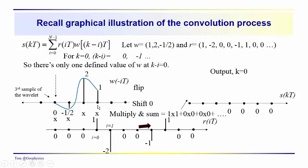So the zeroth value of the wavelet is one, the minus one value of the wavelet is zero, minus two is zero, and so on. For k equal to zero, i equal to zero, we're multiplying the first value of the first reflection coefficient times the first value in the wavelet. So our output here would be one times one, plus zero times zero, plus zero times zero. So we just get one. That's pretty much what we would expect to get.